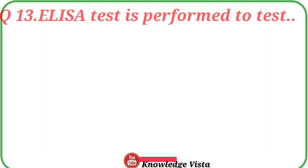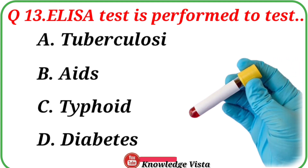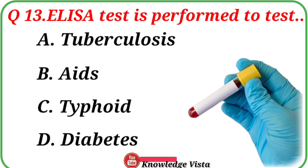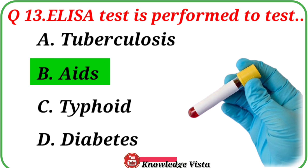Question number thirteen: The ELISA test is performed to test? Option A: Tuberculosis, B: AIDS, C: Typhoid, D: Diabetes. Correct answer is option B: AIDS.